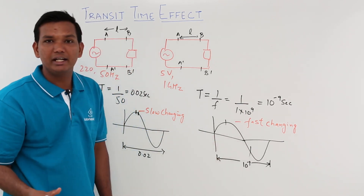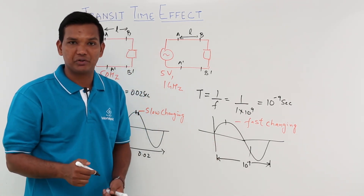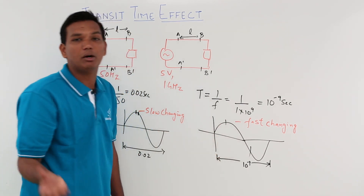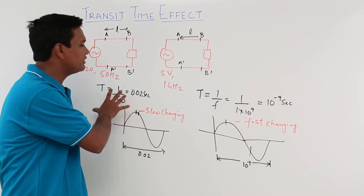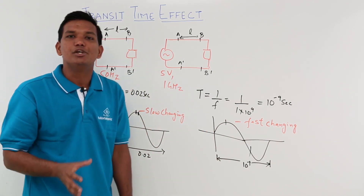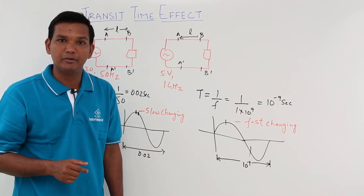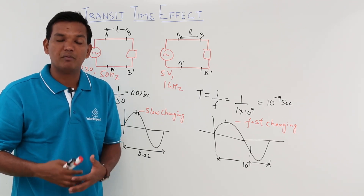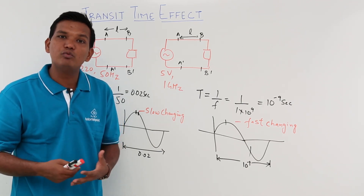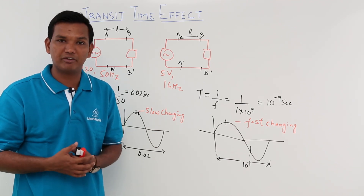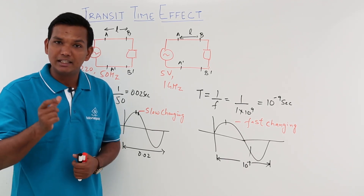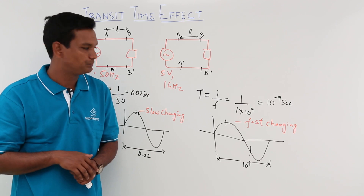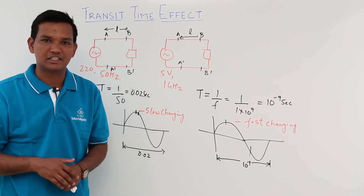If there is a potential difference, the transit time comes into the picture. That is the reason that when dealing with high-frequency circuits, the transit time effect becomes significant. But when dealing with normal network circuits at low frequency, you will not need to care about the transit time effect. The important thing to note is that the transit time effect comes into picture when dealing with high-frequency circuits, and to neglect it, the length of the wire should not be comparable with the wavelength of the signal. We will see more on this in the next videos.